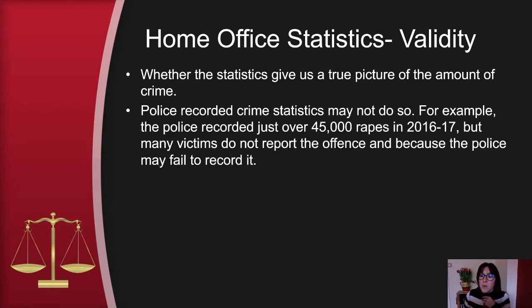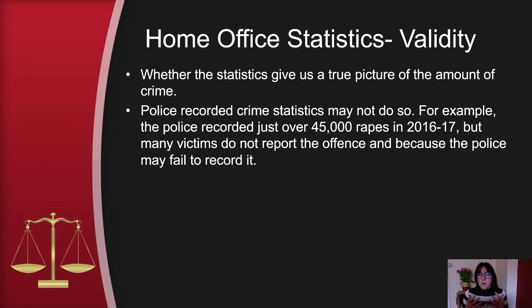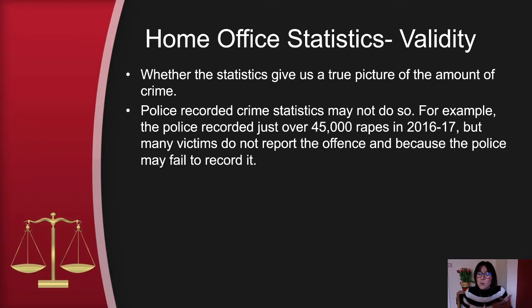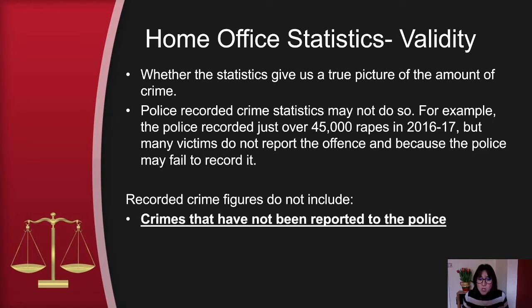Police recorded crime statistics may not give a valid picture. For example, the police recorded just over 45,000 rapes in 2016 to 2017, but many victims do not report the offence, and the police may also fail to record it. So while 45,000 rapes in one year is already an immense number, it might not actually be a valid picture of what is happening in this country. People may not report the crime, so incidents go unrecorded. Recorded crime figures do not include crimes that have not been reported.